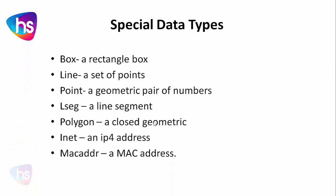Special data types include: BOX for a rectangular box, LINE for a set of points, POINT for a geometric pair of numbers, LSEG for a line segment, POLYGON for a closed geometric shape, INET for an IP version 4 address by default — it automatically creates and stores data as a 4-octet IP address — and MACADDR to store the MAC address of a client machine accessing the system.